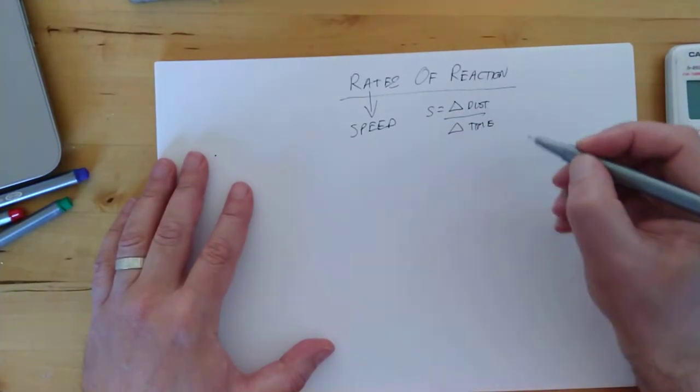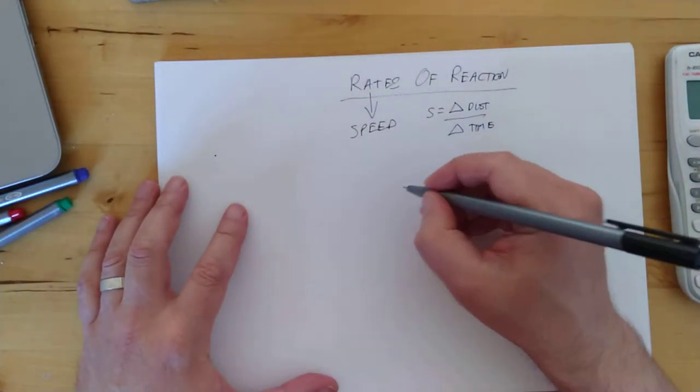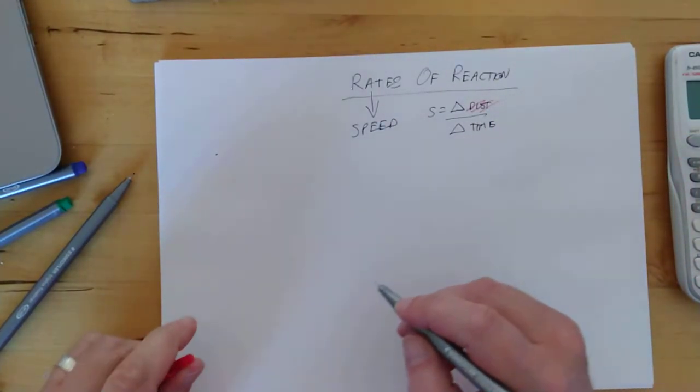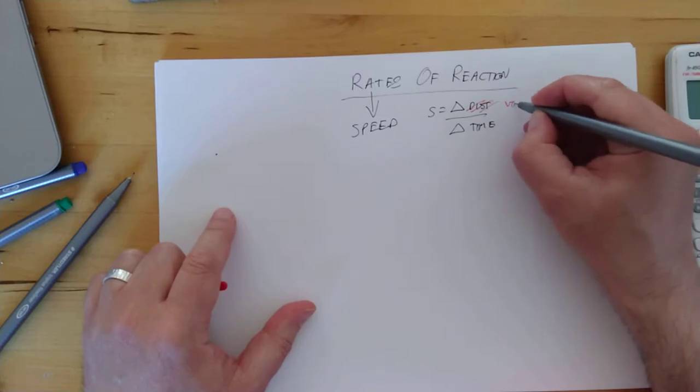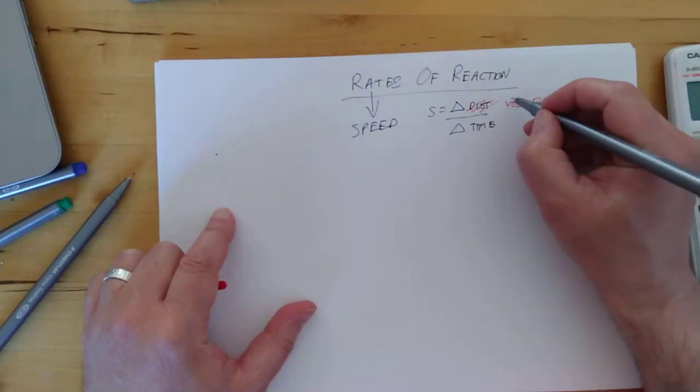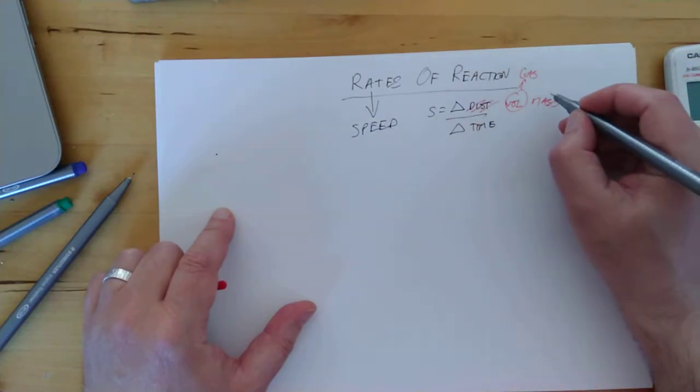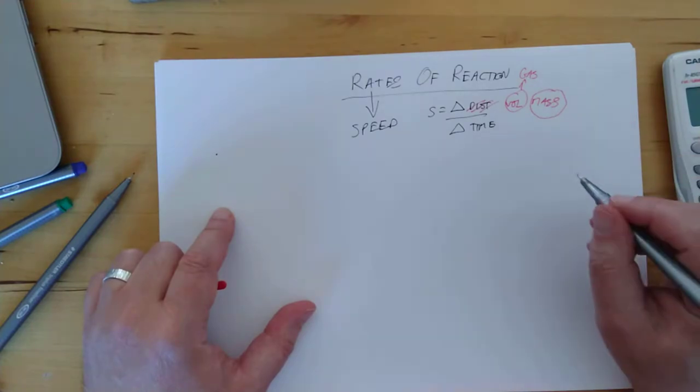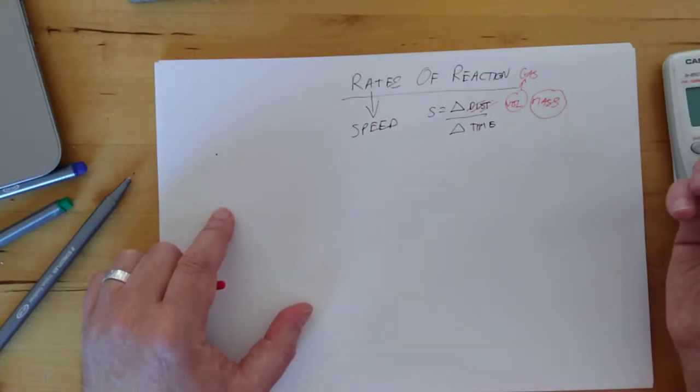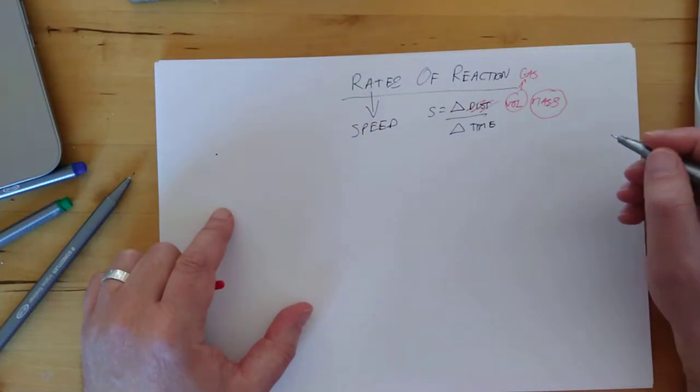So we are going to use pretty much the same thing. In fact, we did use that last year, only we didn't use distance, of course, because in chemistry we don't care about distances. What we tended to have was a change in volume, or a change in mass. This is for gas is given off, of course, when gas is produced. A change in mass is also when gas is produced, only we're not catching the gas this time, we're letting the gas escape, and we're measuring how much lighter the beaker becomes as the gas escapes from the beaker.